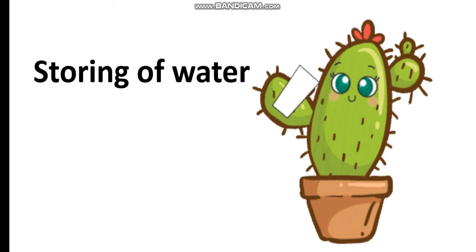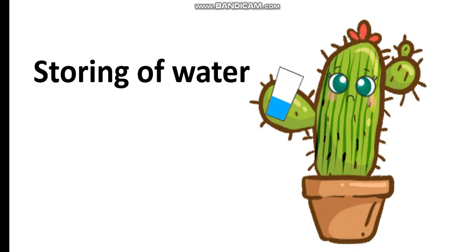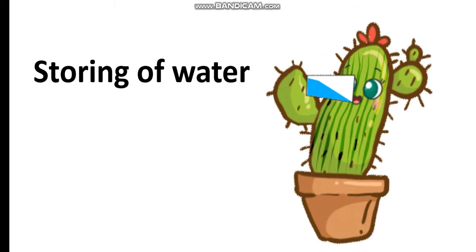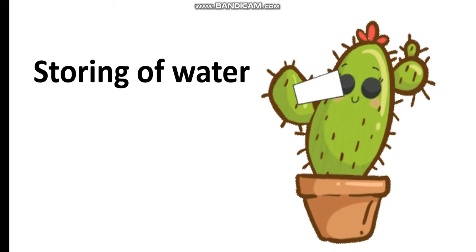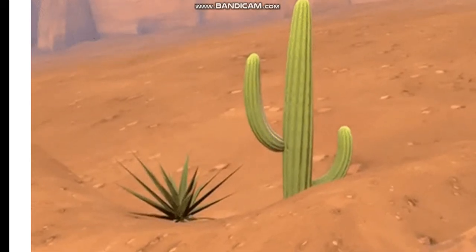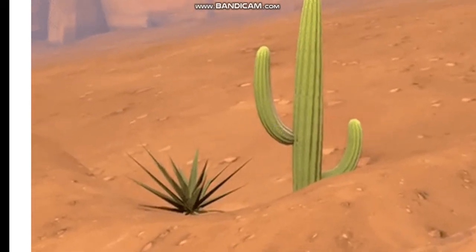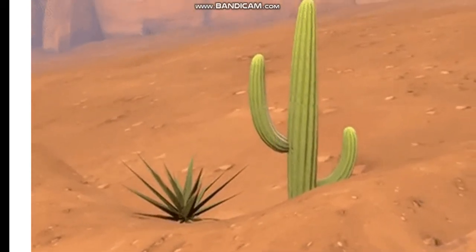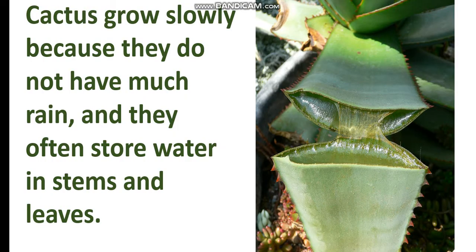The second type of adaptation is storing water. Cactus. The original habitat of cactus is the desert. Cactus grow slowly because they do not have much rain, and they often store water in their stems and leaves.